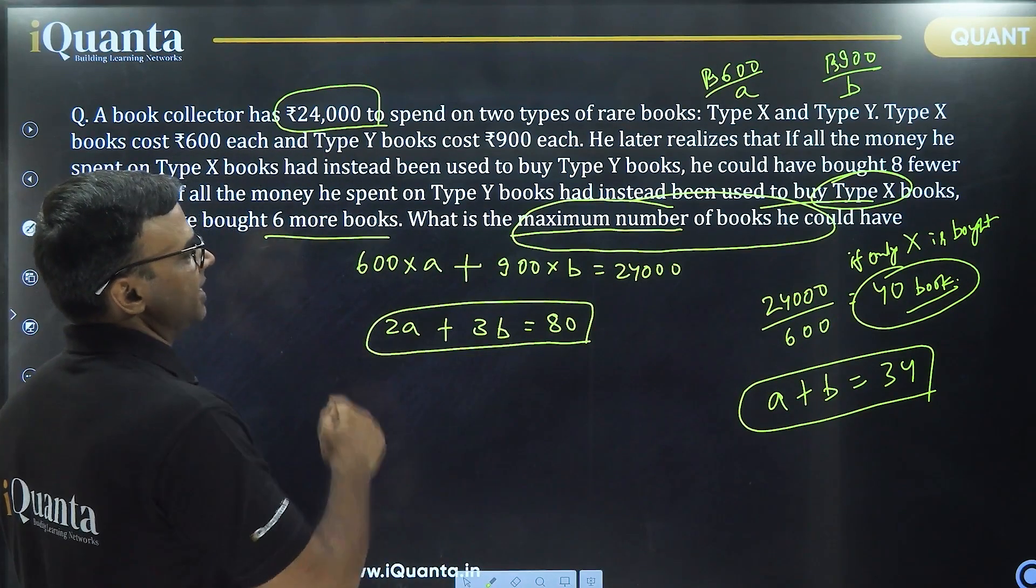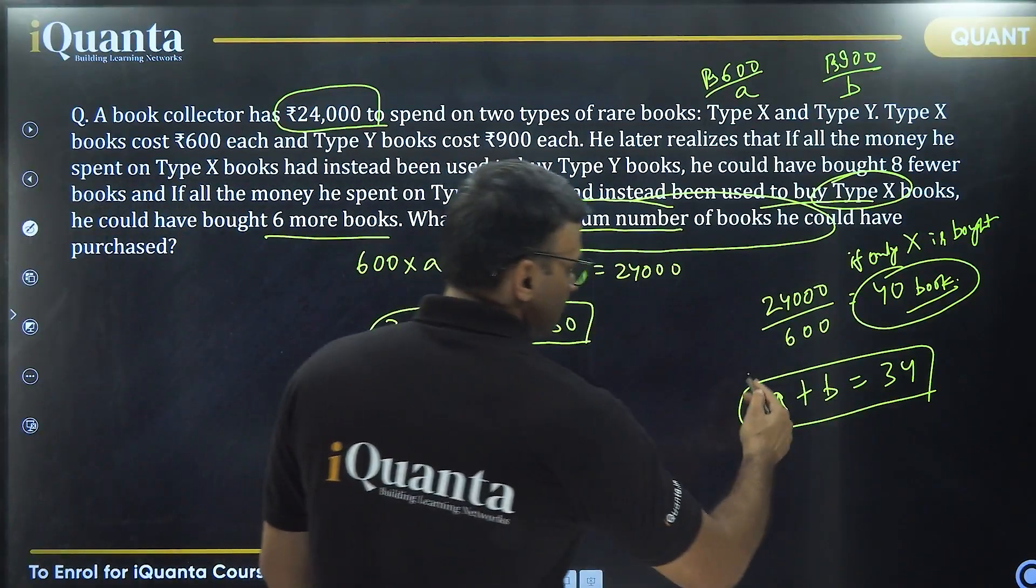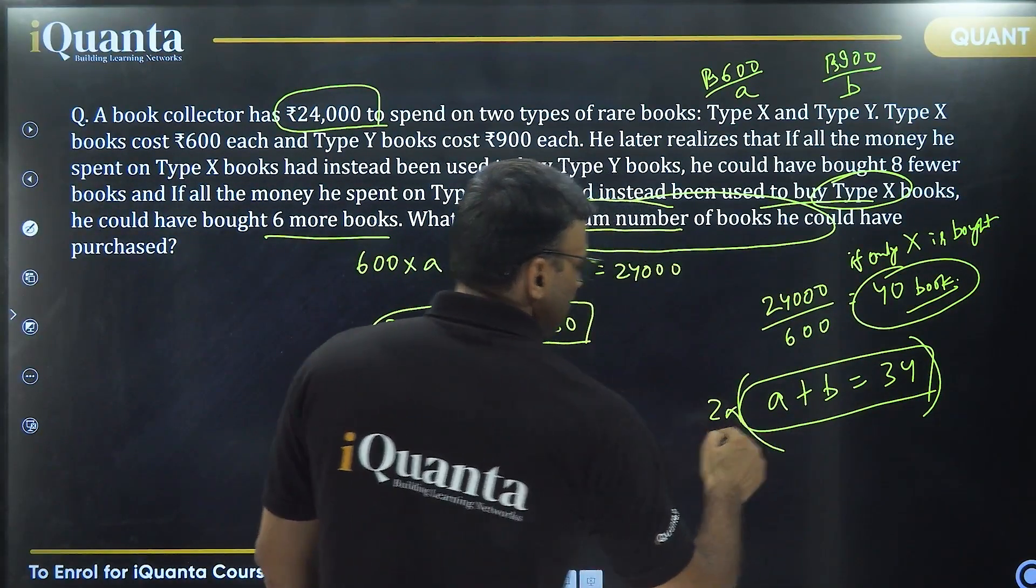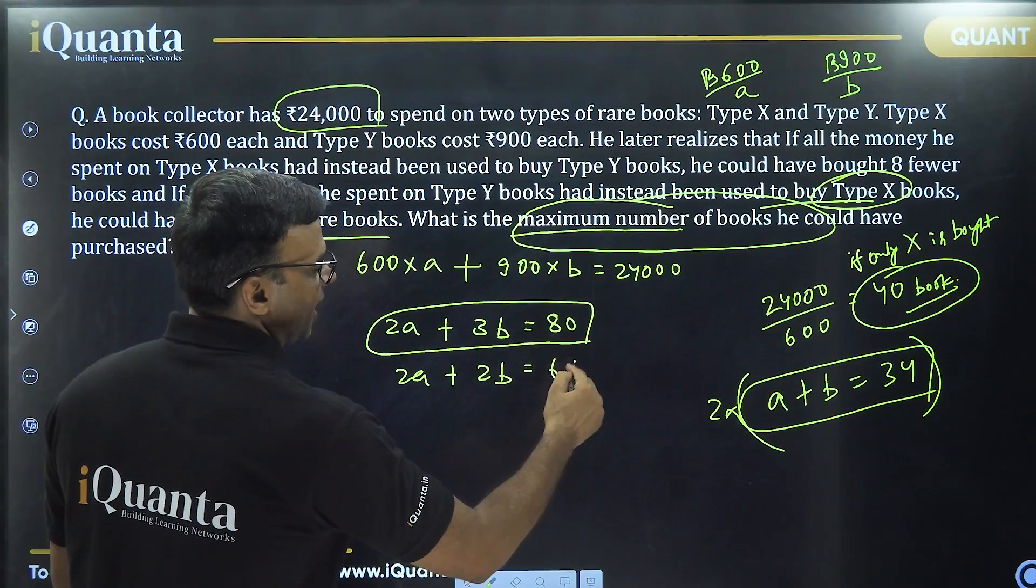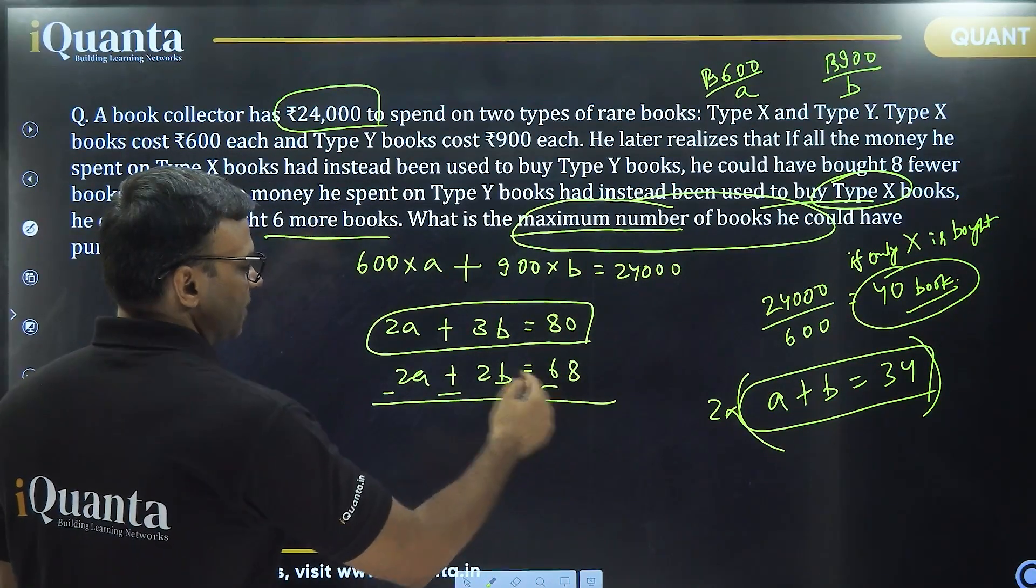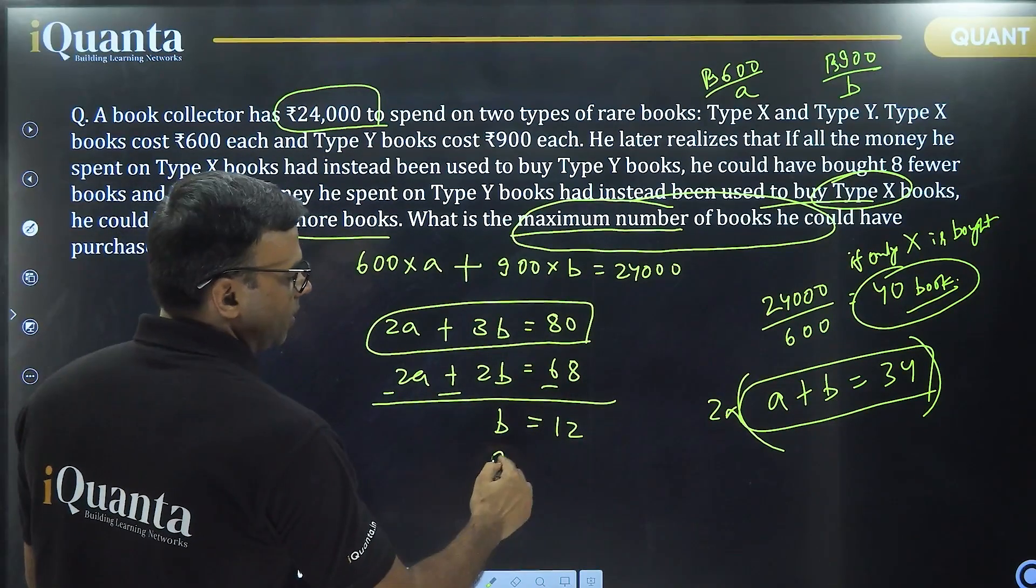Solve these two equations. Multiply this equation by 2, you get 2A plus 2B equal to 68. Subtract. So when you subtract, you get B equal to 12, you get A equal to 22.